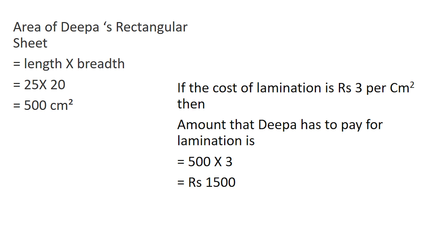If the cost of lamination is rupees 3 per centimeter square, then the amount Deepa has to pay for lamination is 500 into 3, which is equal to rupees 1500.